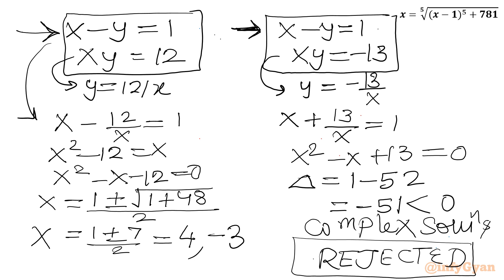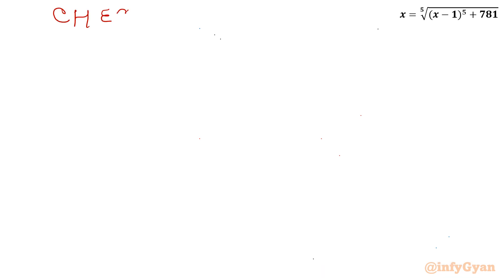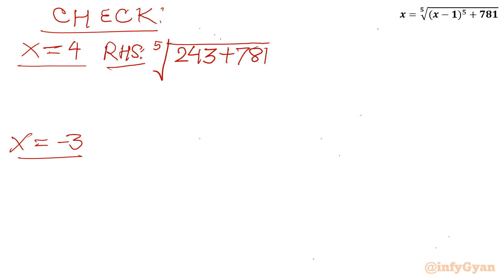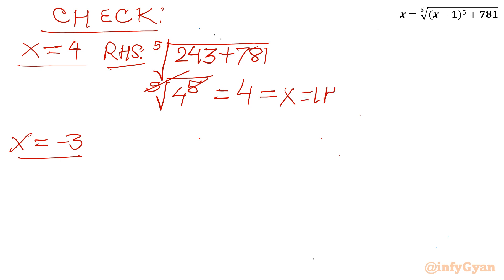So our final answer will be x equals 4 and x equals negative 3. Let us cross verify. For x equal to 4, from the right-hand side: fifth root of (4 minus 1) power 5 plus 781, which is fifth root of 3 power 5 plus 781. 3 power 5 is 243, plus 781 gives 1024. The fifth root of 1024 is 4, which equals our left-hand side x. Hence verified.